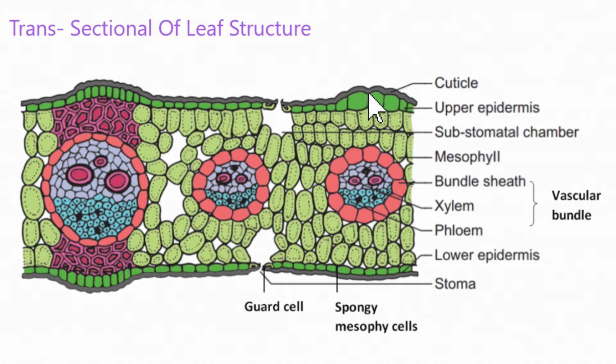In this image, we can see the top layer of the leaf, called the cuticle. Below that, there is an upper epidermis, and lower epidermis on both extremes.